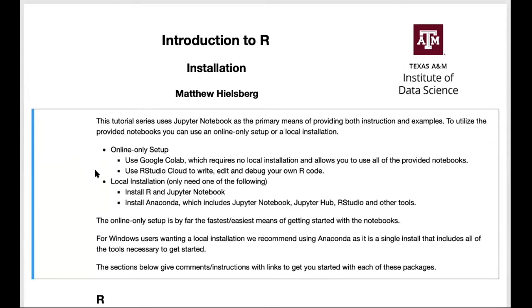There are two options you can choose from to get started. The first requires no installation and can be done only by using your web browser. The second option requires a local installation of either R and Jupyter Notebook, or an installation of Anaconda, which includes both R and Jupyter Notebook along with some other tools. The first option, using only the web browser, is by far the fastest and easiest way to get going.